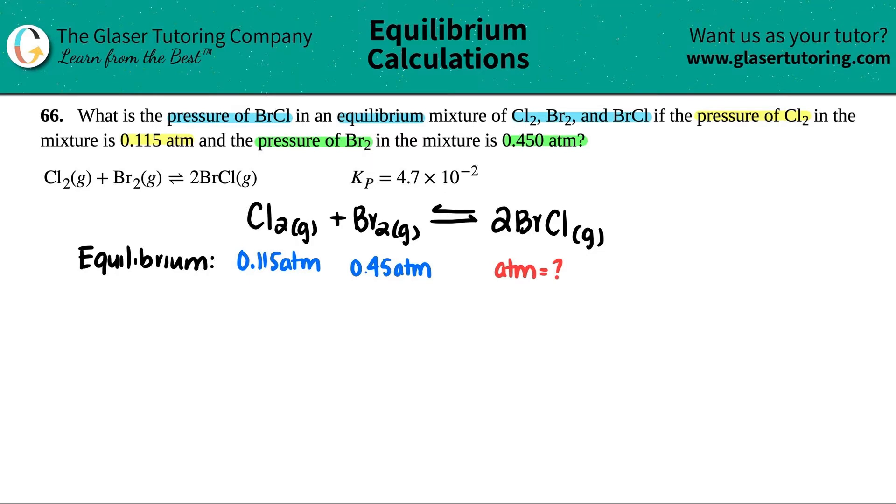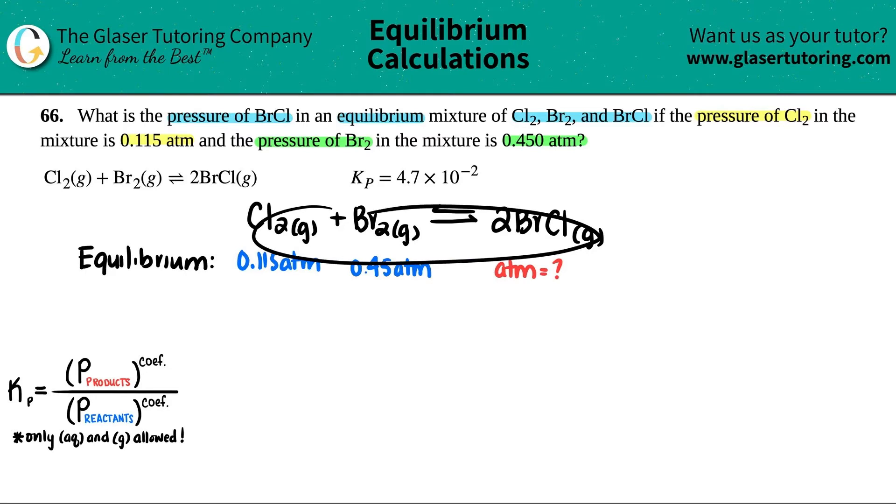The generalized formula for Kp is the pressure of the products divided by the pressure of the reactants, and they're all raised to the coefficients. We can make a specific equation for our balanced equation.